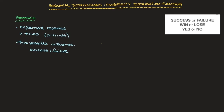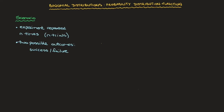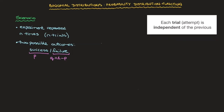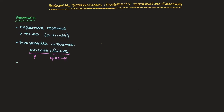We say success or failure, but we could also say win or lose, or yes and no. For example, if I'm rolling a die and I'm interested in rolling a six, then each time I roll a six that would be a success, and anything other than a six would be a failure. The probability of a success we call p, and since there are only two possible outcomes, the probability of failure is the complement: q = 1 − p. Each trial of this experiment is independent of the previous, meaning the outcome of one trial won't affect the next.